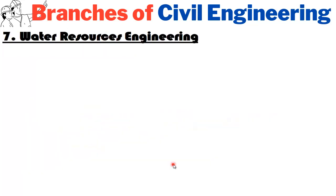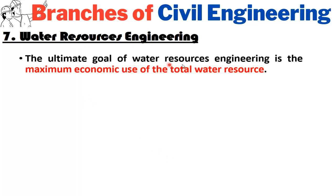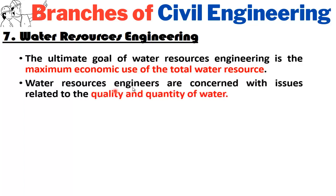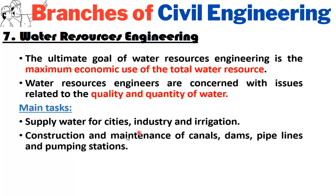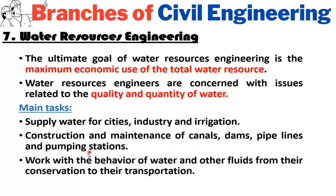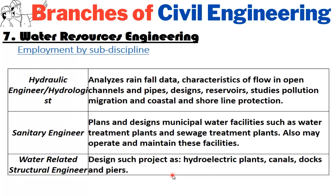The seventh and last major field of civil engineering is water resources engineering. The ultimate goal of water resources engineering is the maximum economic use of total water resources. Water resources engineers are concerned with issues related to the quality and quantity of water. Main tasks include supplying water for cities, industry, and irrigation; construction and maintenance of canals, dams, pipelines, and pumping stations; and working with the behavior of water and other fluids from their conservation to their transportation.